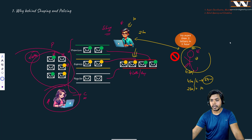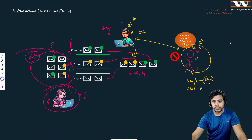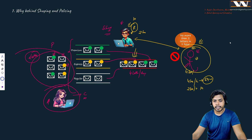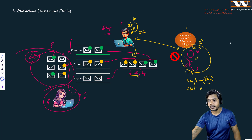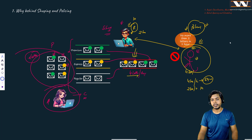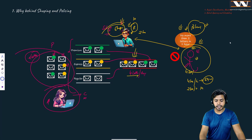This guy can only receive two letters in one hour because of the contract. Mr. Rahul has to do some shaping — instead of sending four letters per hour he has to stop down his speed. The other guy is doing policing, meaning if you send more than two letters per hour it is going to be a problem. Rahul says okay, I will shape my rate in accordance with the policing. That is where, if policing is happening somewhere, I need to stop my rate accordingly and do shaping.